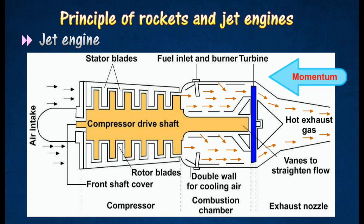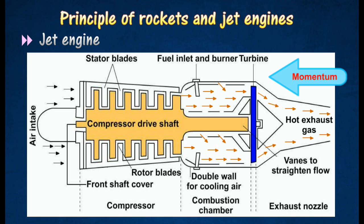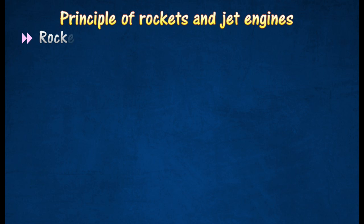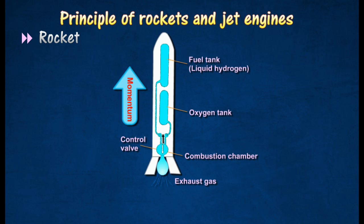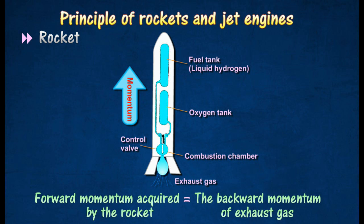As momentum is conserved, the engine will acquire a momentum of the same magnitude, but in a direction opposite to that of the exhaust gas, enabling the aircraft to move forward. The principle of conservation of momentum can also be applied to rockets. The forward momentum acquired by the rocket equals the backward momentum of the exhaust gas flowing out of the rocket, making the rocket propel upwards.